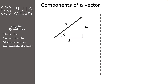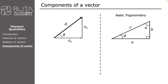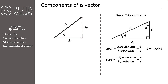Before proceeding with the components of the vector, let's change our focus to maths and do some revision about basic functions in trigonometry. On the screen we have a right triangle with A and B as its sides, C as the hypotenuse, and alpha and theta as angles. As we know, sine of an angle is equal to the ratio of the side opposite to it to the hypotenuse. For angle theta, sine theta is equal to B over C. Rearranging the equation gives B equal to C times sine theta, which helps us calculate the length of side B when the hypotenuse and angle theta are provided. Cosine of an angle in a right triangle is equal to the ratio of the adjacent side to the hypotenuse.